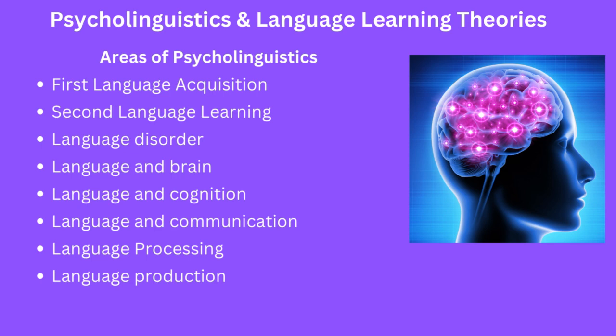The seventh scope is language processing, referring to the cognitive processes involved in understanding and interpreting language, including perception, memory, and attention. The last scope is language production, referring to the cognitive processes involved in producing language, including grammar, vocabulary, and the ability to formulate thoughts in spoken and written language.